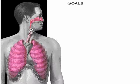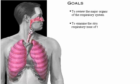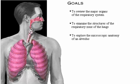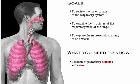Your goals for learning are: to review the major organs of the respiratory system, to examine the structures of the respiratory zone of the lungs, and to explore the microscopic anatomy of an alveolus. You also need to know the location of pulmonary arteries and veins. To see definitions of terms, click the bold red words.